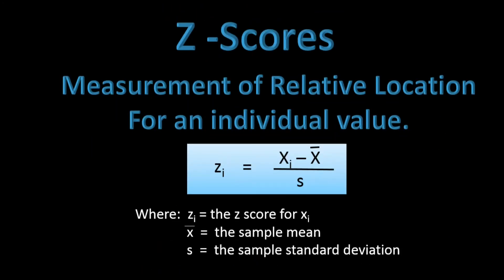The next topic we need to cover is z-scores. Z-scores give us a measure of relative location so that we can determine how far any individual value is from the mean. Because it is a relative measurement, we can use it no matter what the units are for the original data. The formula for calculating a z-score is: z subscript i equals x subscript i minus x-bar divided by s, where x-bar is the sample mean and s is the sample standard deviation. To calculate the z-score for any value, all we need is x-bar and s.